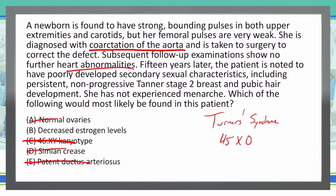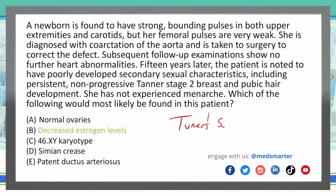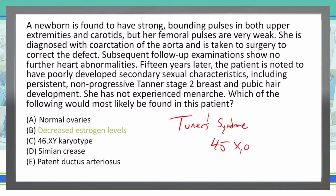Therefore, Choice B — decreased estrogen levels — is our only remaining answer and is the correct answer. This is Turner syndrome, which is a 45XO karyotype. Oftentimes these patients have coarctation of the aorta at birth, and then down the road when they are going through puberty, they have amenorrhea.